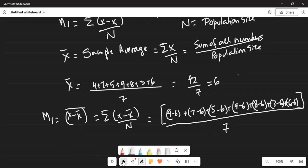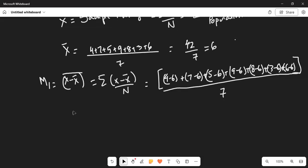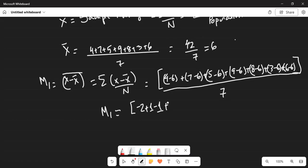So if I create some space, M1 is equal to the first moment around the mean: 4 minus 6 is minus 2, 7 minus 6 is plus 1, 5 minus 6 is minus 1, 9 minus 6 is 3, 8 minus 6 is 2, 3 minus 6 is minus 3, and 6 minus 6 is 0. Same type of parenthesis, divided by 7.